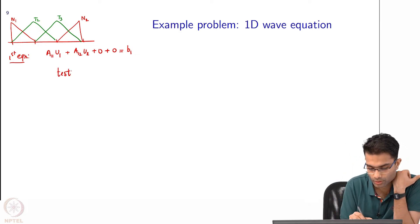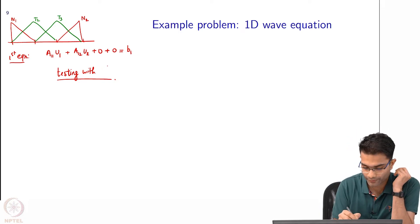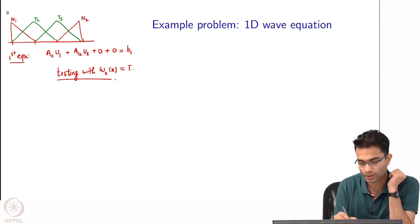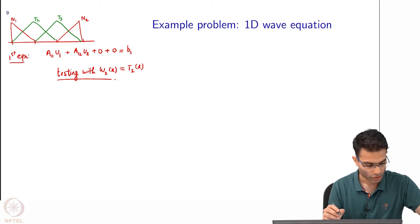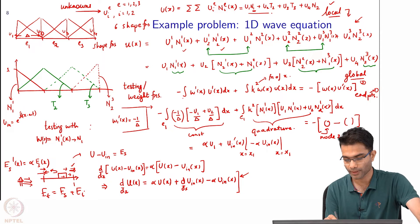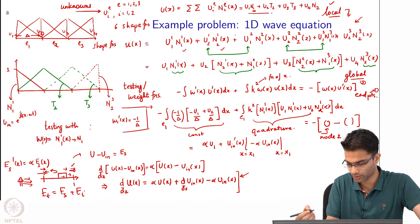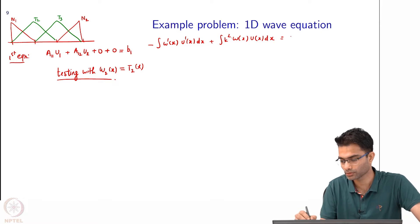Now let us do testing with t2. We have to test with the weighting function 2. We did with weighting function 1, now we have to do with weighting function 2 which is w t2 of x. We will look at the first term minus w prime x u prime x dx, then I had a k squared w x u x dx equals something at end points.